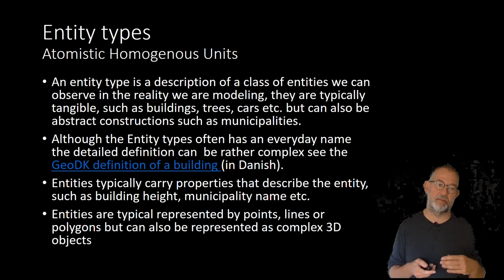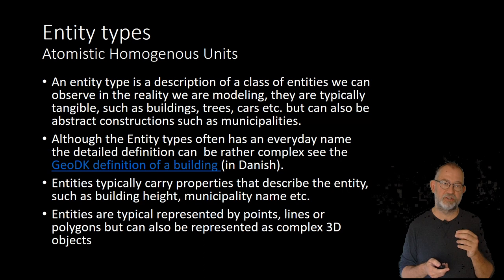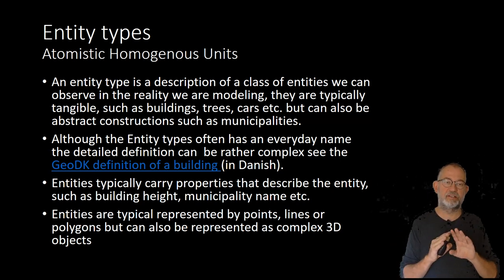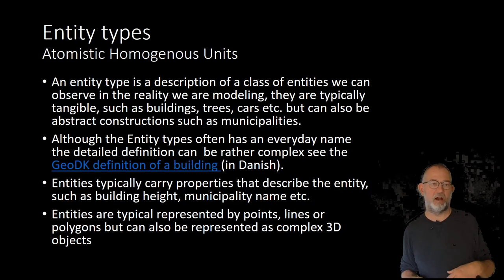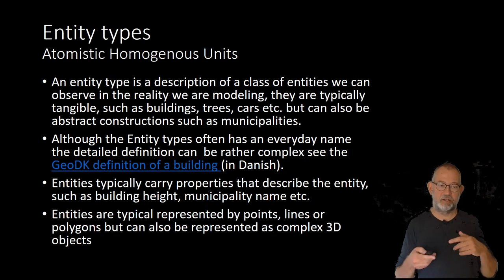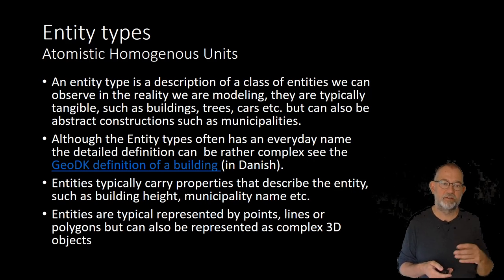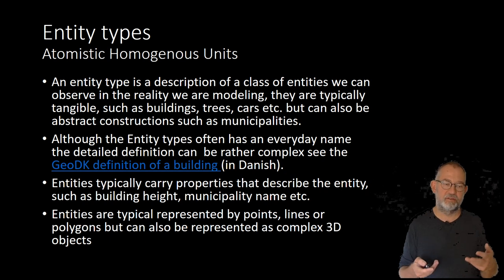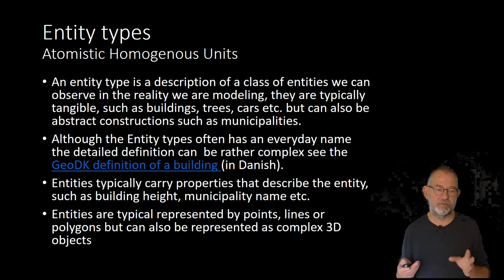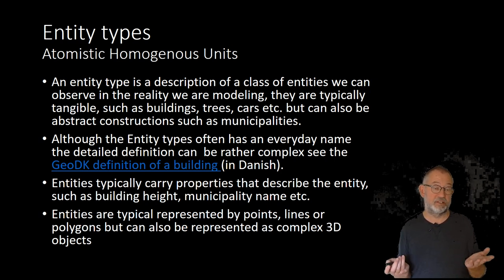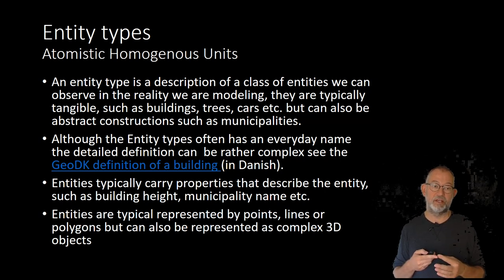We typically give our entity types an everyday language name such as 'building,' but there will typically be more precise definitions. For instance, we have a row of different buildings in a town — when is it one building, and when does it break into multiple buildings? Do we count cycle sheds as buildings? In the GeoDK, which is the main topographical dataset of Denmark, you will find examples of how we precisely define these different elements. So different countries will have different datasets with everyday language names but with specific meanings. For instance, a forest does not necessarily have to have trees in it, because in the Danish definition a forest is an area that has been or will again be covered by trees.